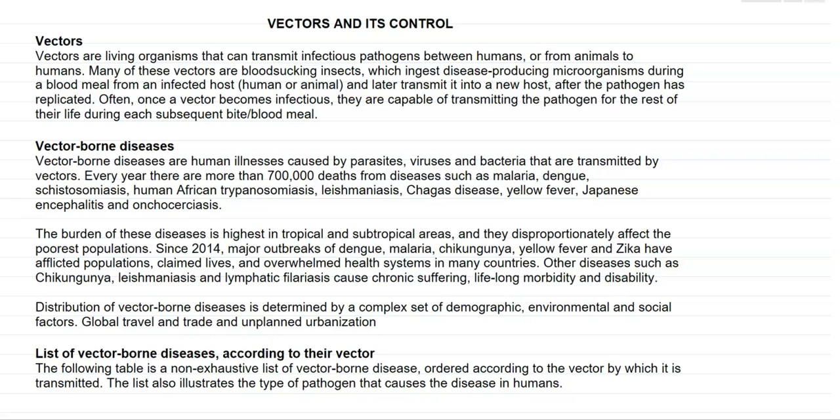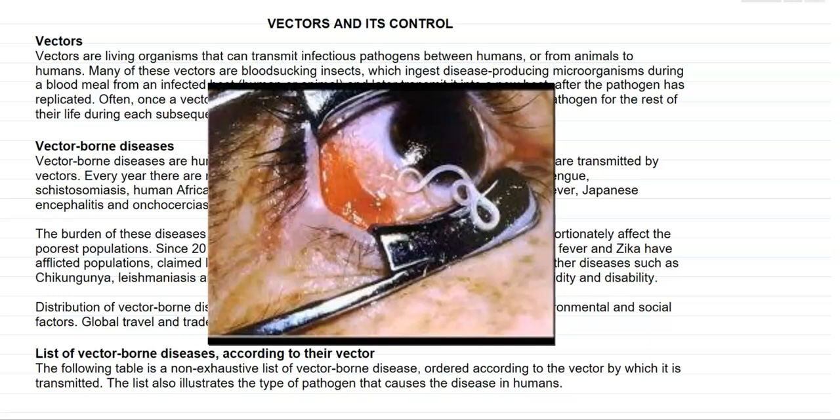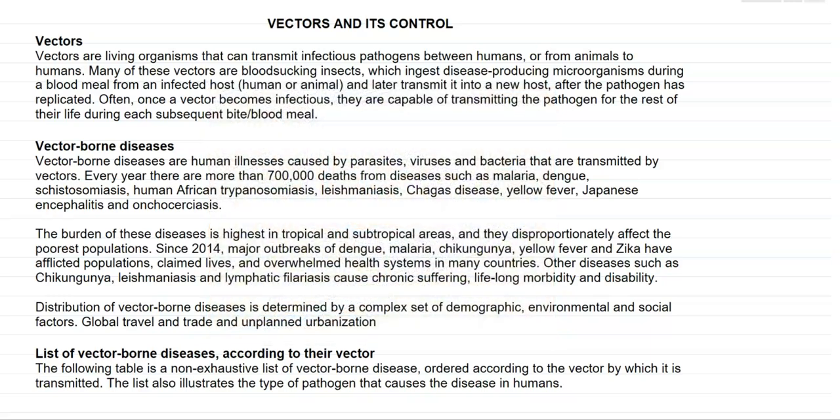Then human African trypanosomiasis, leishmaniasis, Chagas disease, yellow fever, Japanese encephalitis, and onchocerciasis. These are all the various forms of vector-borne illness that are affecting humankind.